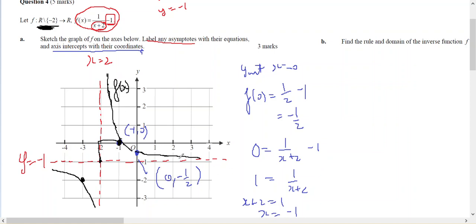Use of color helps the examiner see things. Double check: I've labeled the asymptotes, I've labeled the axial intercepts. Hopefully that's going to give me three marks.